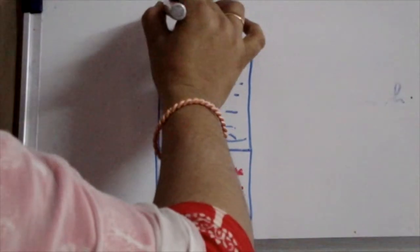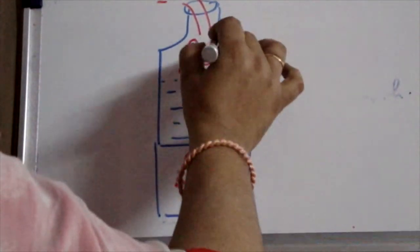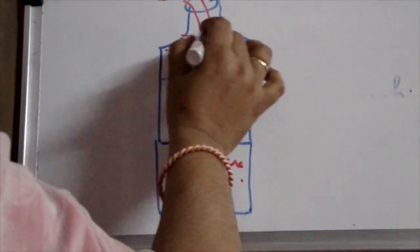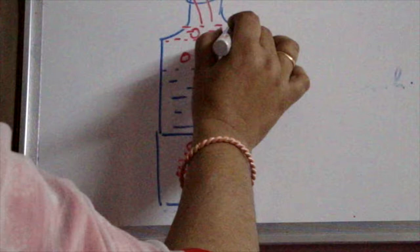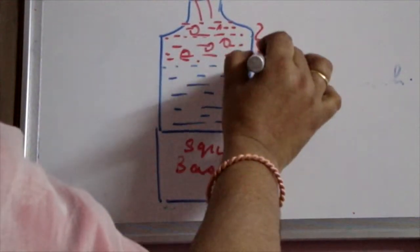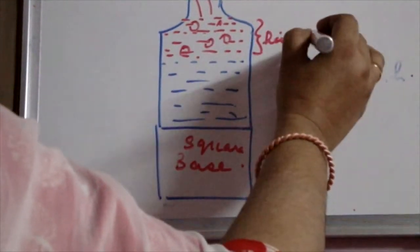To solve problems we must know what is the shape of immersed object so that we can find out volume of object, which depends on its shape whether it is cuboid or cube or cylinder or sphere. And second is base area of container in which liquid is placed.